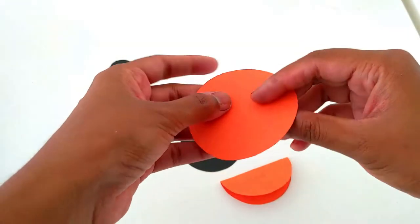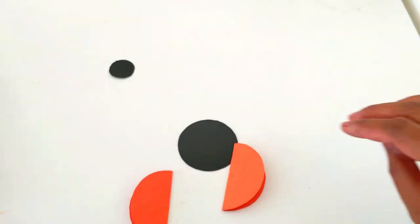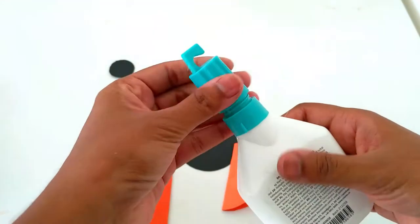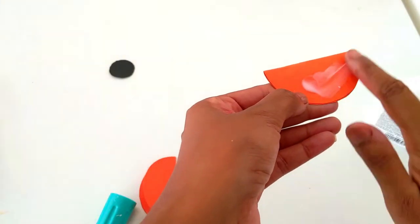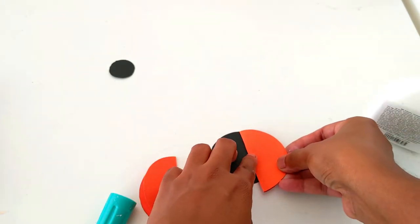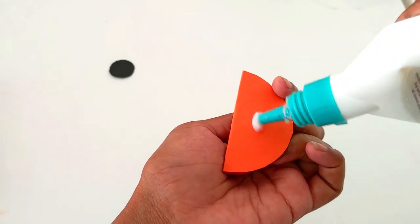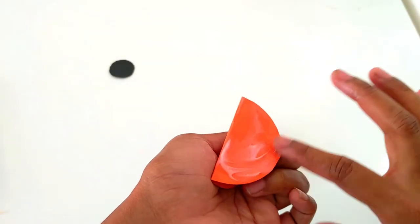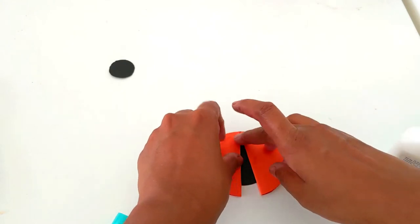Now I am folding this in this way. Now we need to apply glue. These half circles will become the wings of the ladybug. I'm going to attach them like this. Other wing. So now the body is ready.